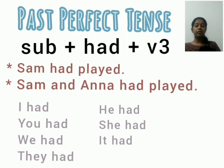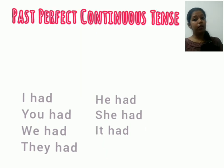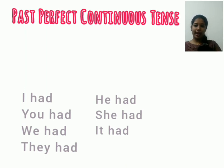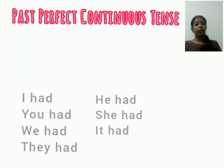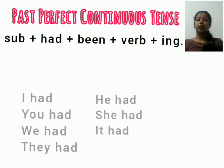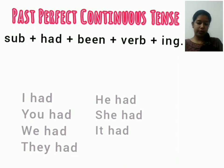Next, take the past perfect continuous tense — it is a mixture of perfect and continuous tense. In past perfect we use 'had,' so here also we need 'had.' Continuous means the ING form. Since it is perfect continuous, we need one more element: 'been.' The format of past perfect continuous tense is: subject plus 'had' plus 'been' plus the ING form of the verb.